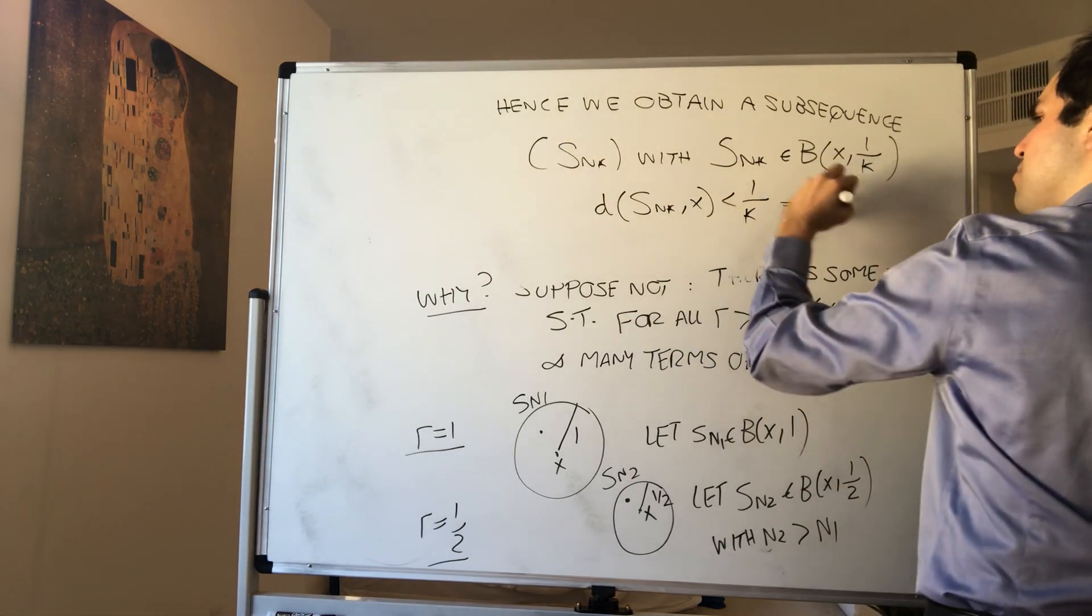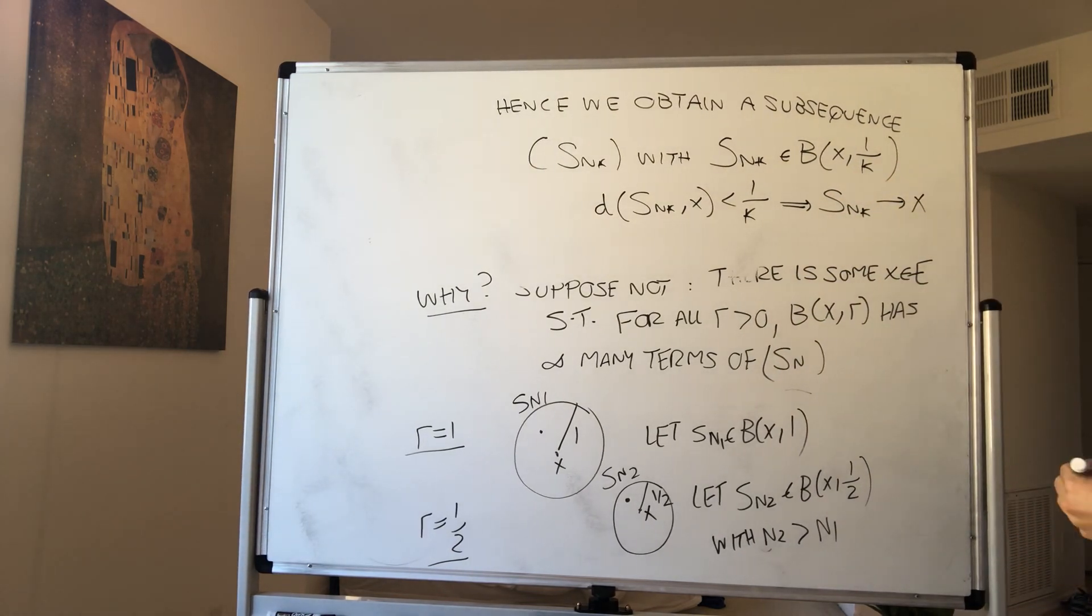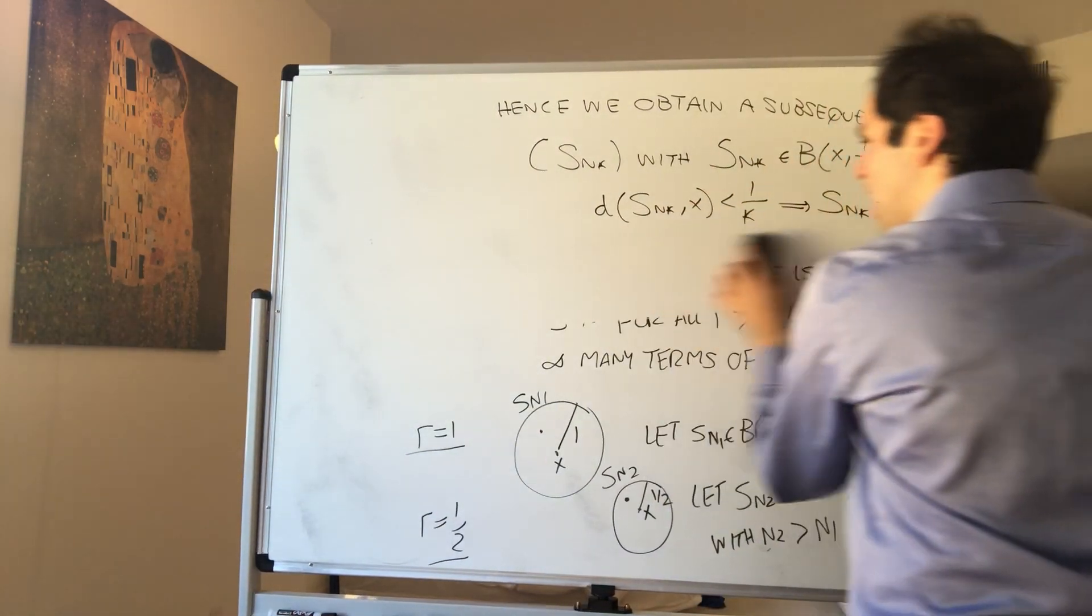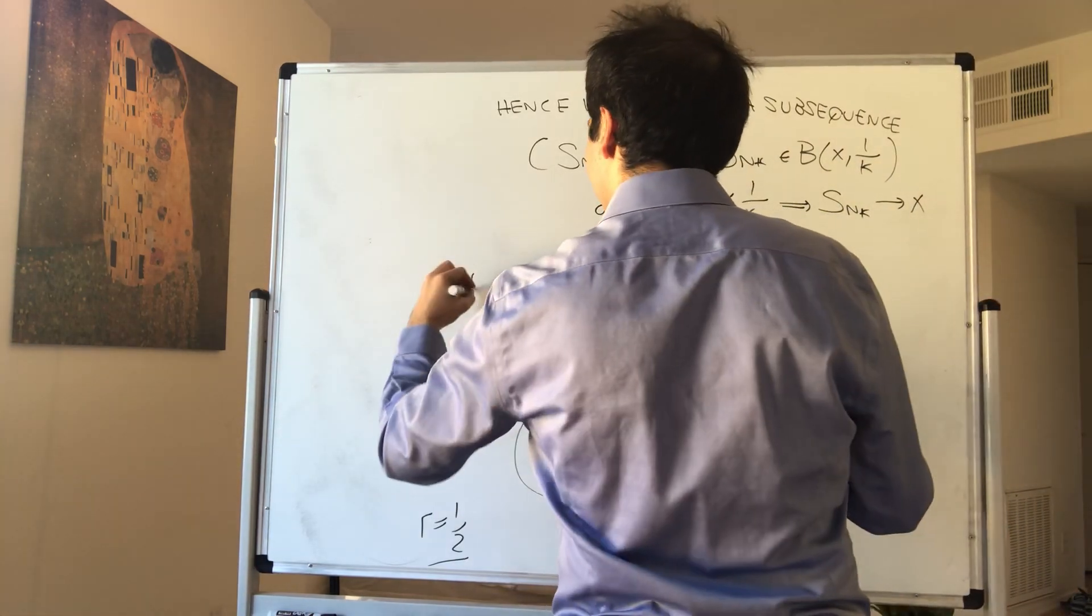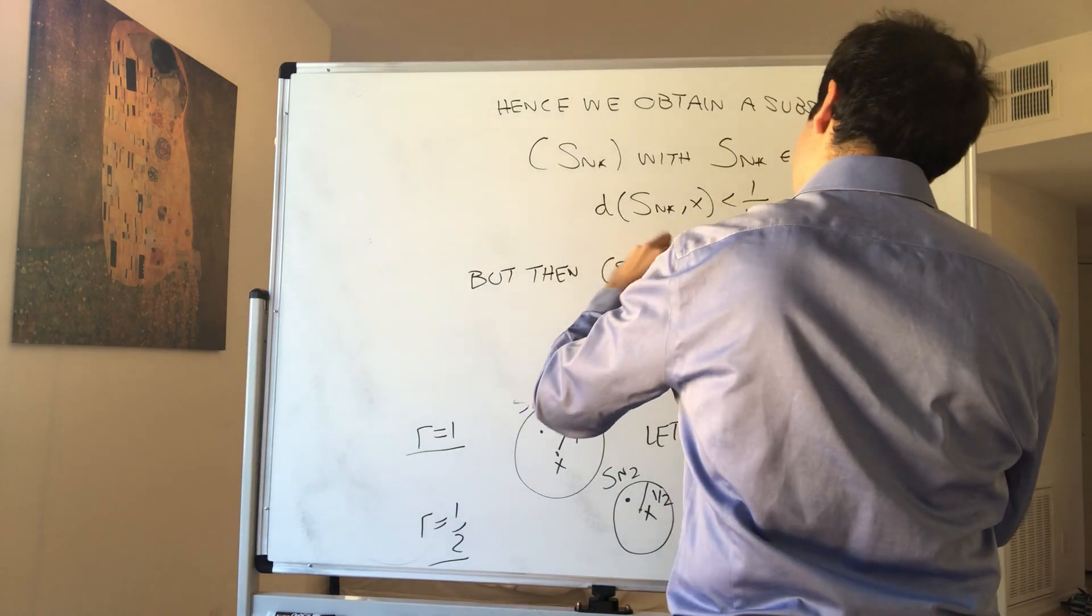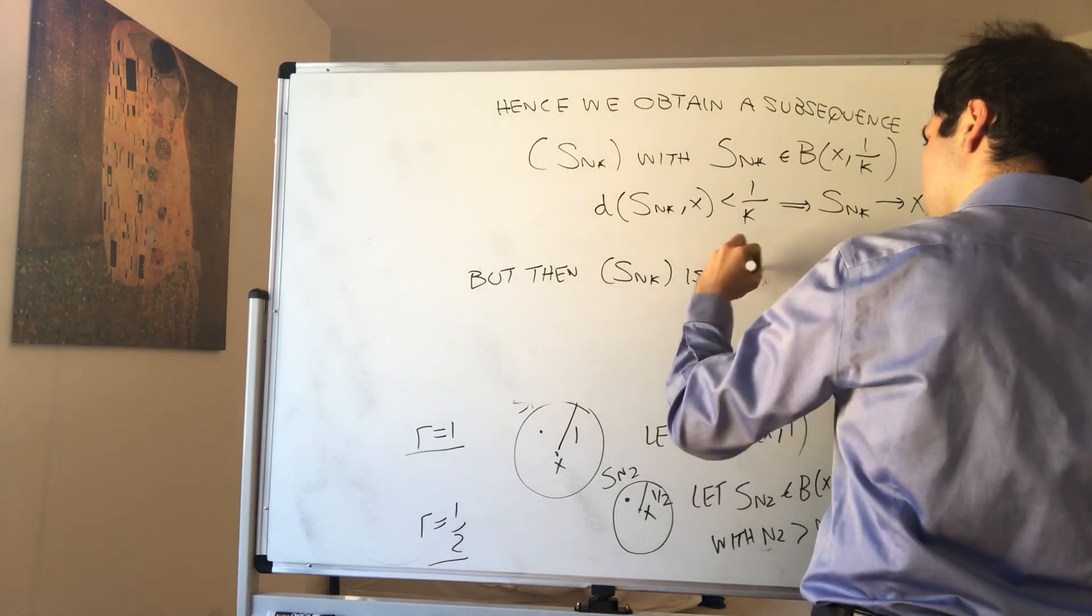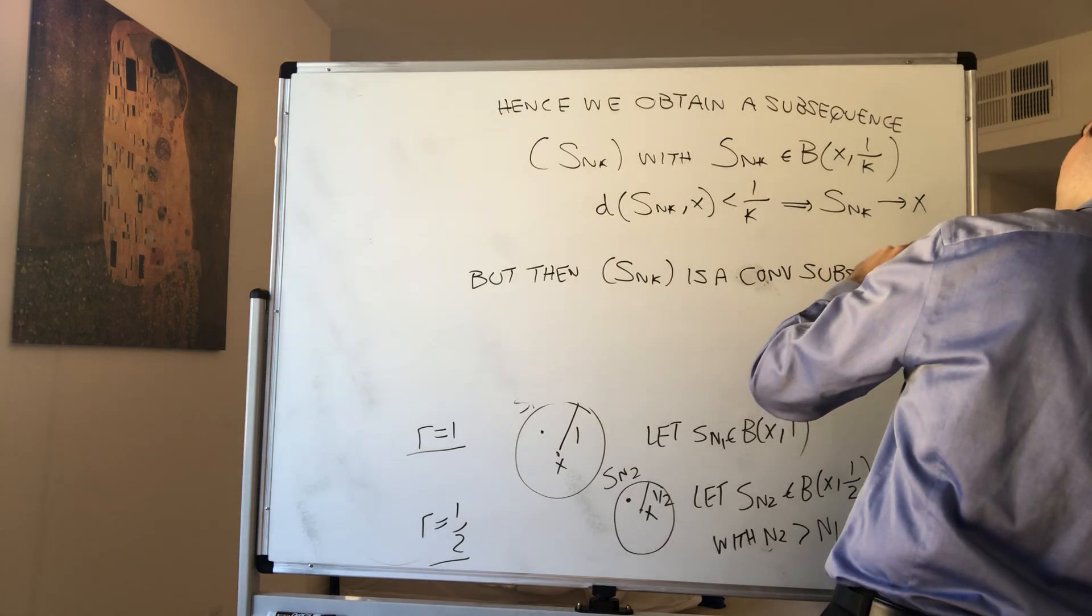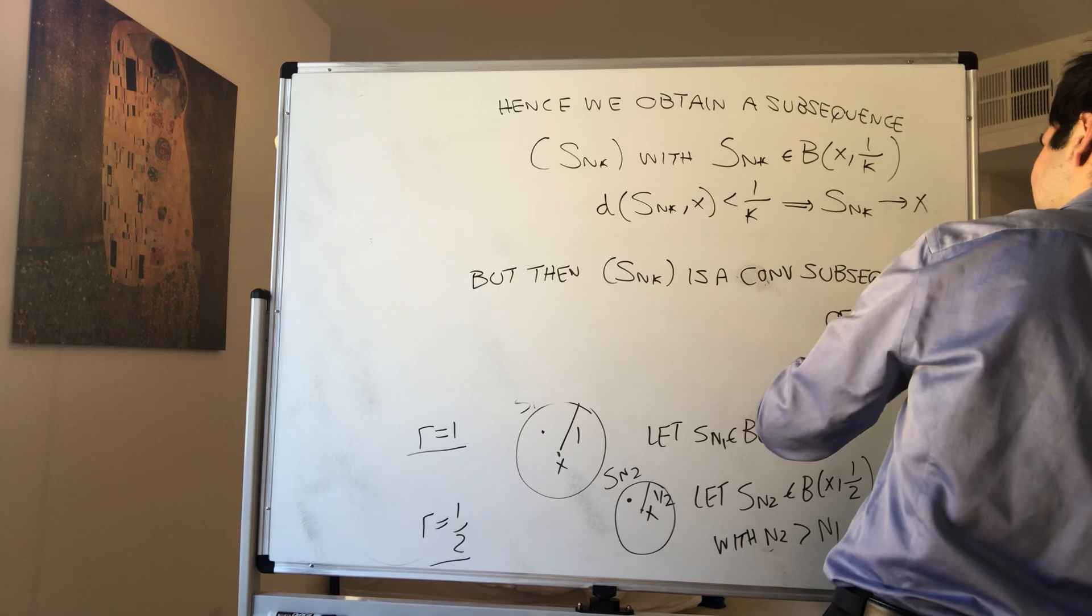But then this implies that Snk converges to X, which contradicts the fact that Sn does not have a convergent subsequence, but then Snk is a convergent subsequence of Sn.